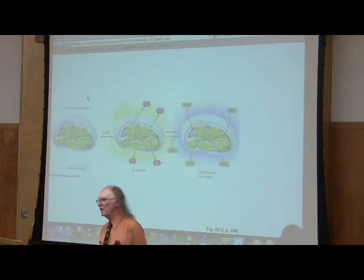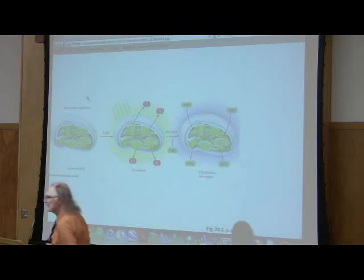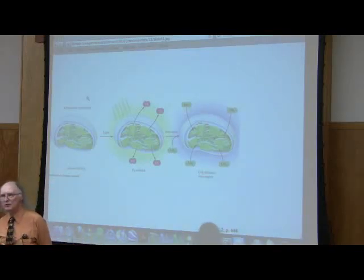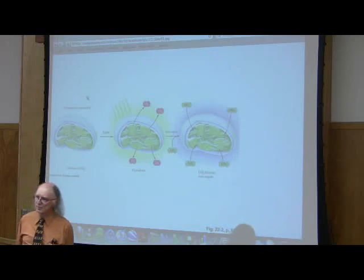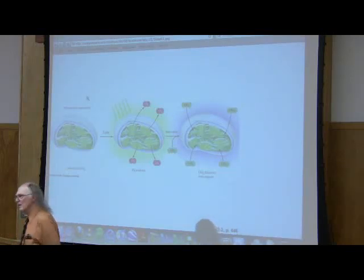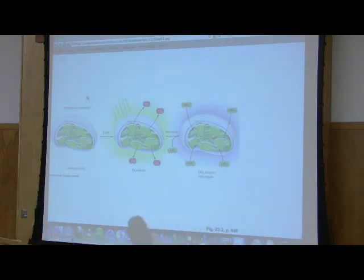Now I'm going to show you a figure with all that. I just want to talk to you in words first. That's what's happening. These are the reactions of the light cycle of photosynthesis. I'll summarize. Energy from light is used to split water. Oxygen is released. Electrons and protons are released.